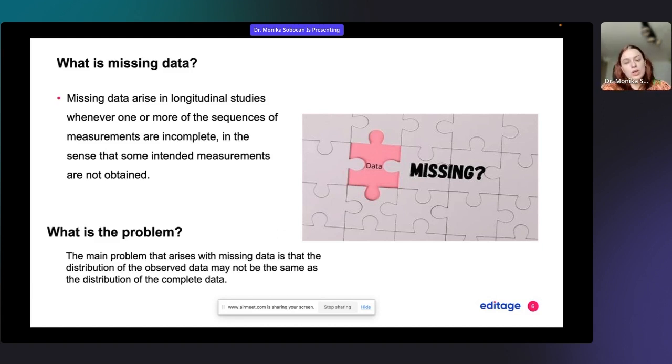Especially when looking at retrospective studies, you often encounter missing data because you're looking at different electronic records from past years where you might not have all the data available and no way to obtain it. In such cases, it's important to know which data is important and which you can omit from further analysis.